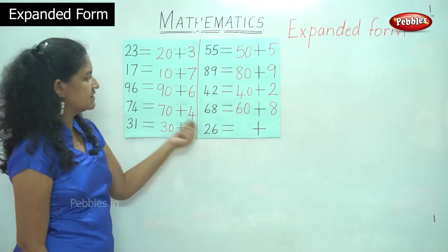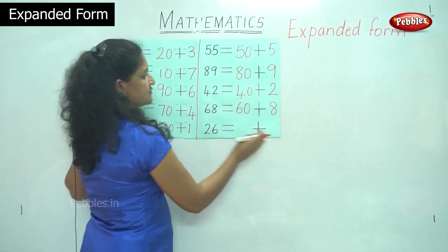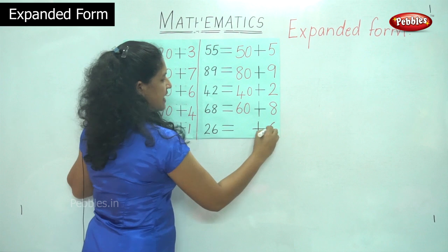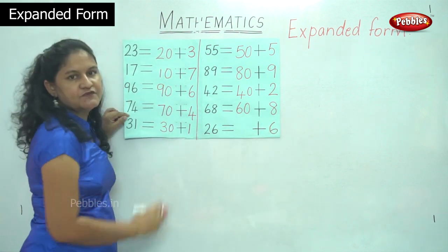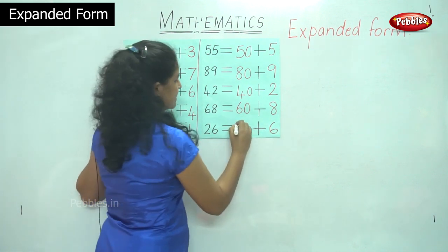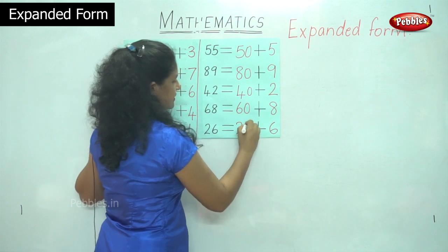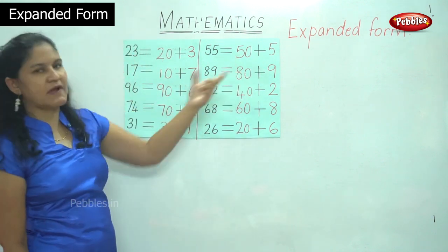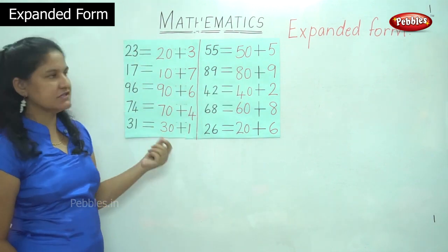The next number is 26. In the ones place I have number 6, and in the tens place I have 2 tens, which is nothing but 20. This is the expanded form of these numbers.